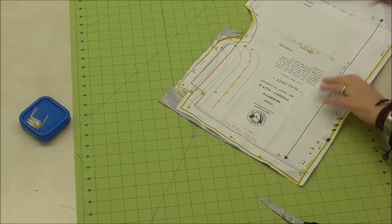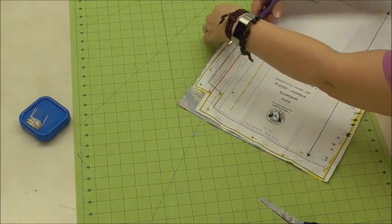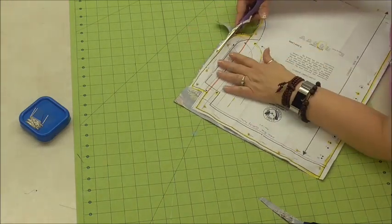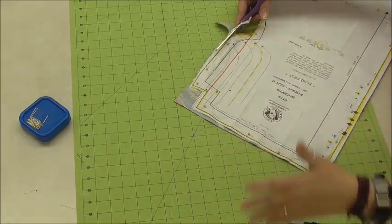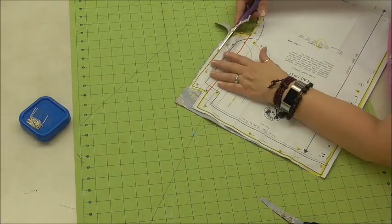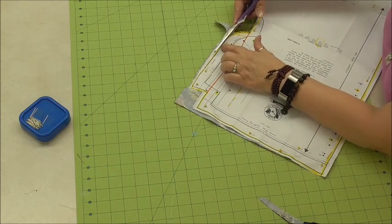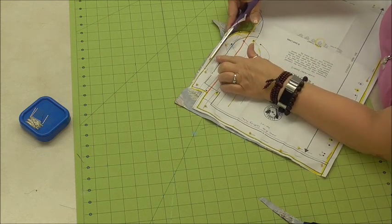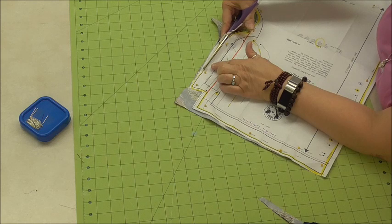So I'm going to stop and turn my fabric. There's nothing wrong with stopping and turning your fabric. It's easier for me to go kind of from right to left as I'm cutting. And then I can always see my line to make sure that I am cutting right next to it, but not cutting it off.